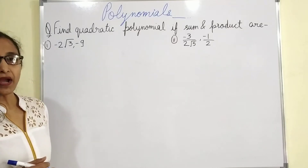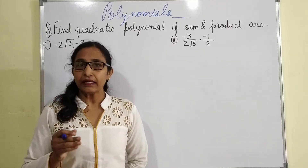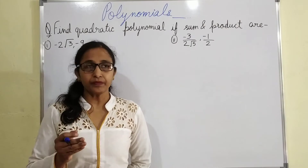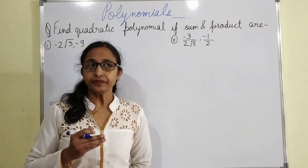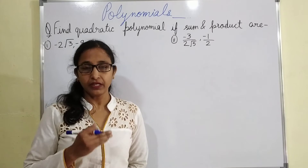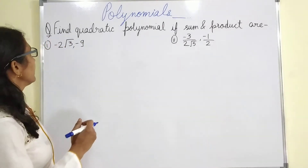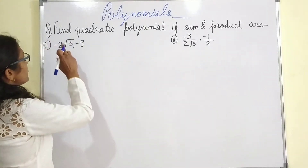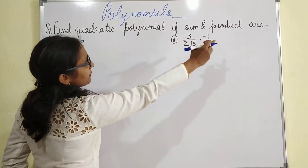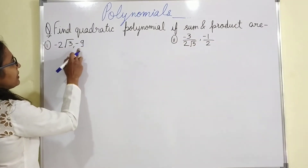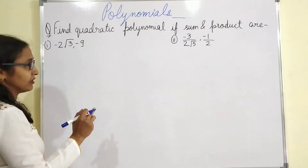In the previous video, I explained the nature of parabola and sums based on zeros and their coefficients — the relation between zeros and their coefficients. Now, a new question: find a quadratic polynomial if the sum and product of zeros are given. This is the sum and this is the product — these two things are given.